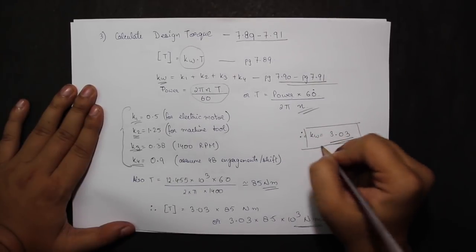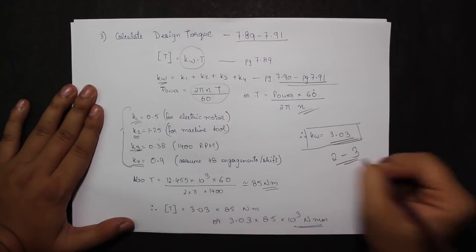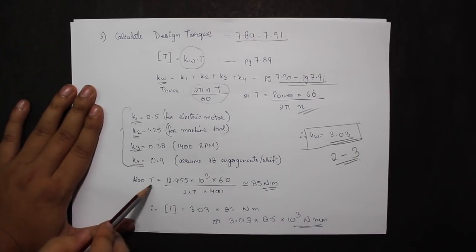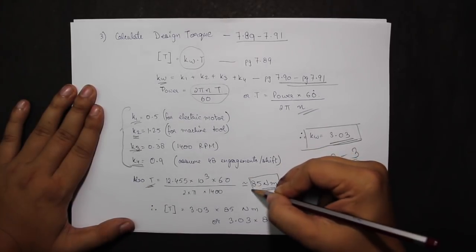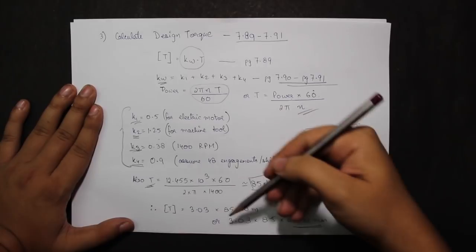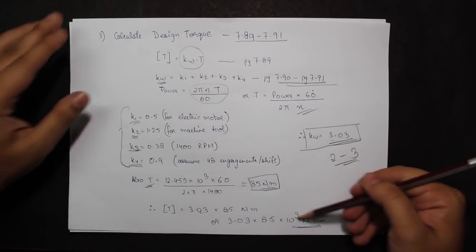The approximate value for Kw lies between 2 and 3. Also my T, or the torque from this formula, turns out to be 85 Nm. Therefore my design torque by multiplying these comes out to be 3.03 times 85 times 10 to the 3 Nm.